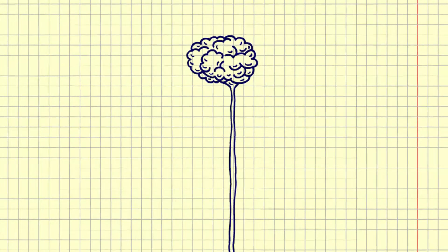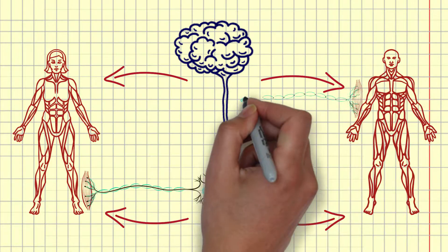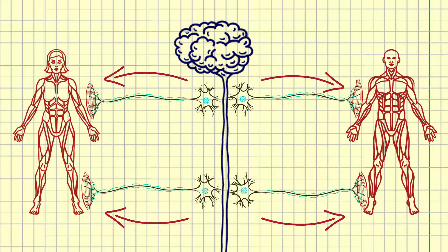The central nervous system sends messages back to our skeletal muscles through motor neurons, allowing for voluntary and reflexive movements.